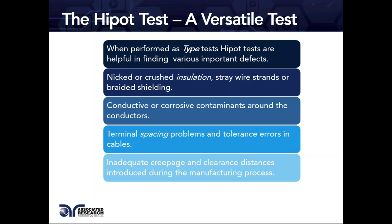Other detectable issues include spacing problems and tolerance errors in cables. If conductors on a PCB are not spaced appropriately, energy can jump between them — something like arcing, which we'll discuss later. Inadequate creepage and clearance distances introduced during manufacturing are also detectable, making the Hypot test a valuable tool for understanding overall product insulation quality.